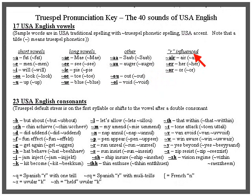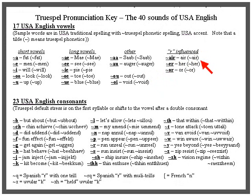The R-influenced vowels: the letter R following a vowel often changes the vowel a little bit, so these are indicated as phonemes in themselves. For example, 'air' — it's different than 'at' and different than 'ate.' It's an in-betweener that kind of blends into the R.